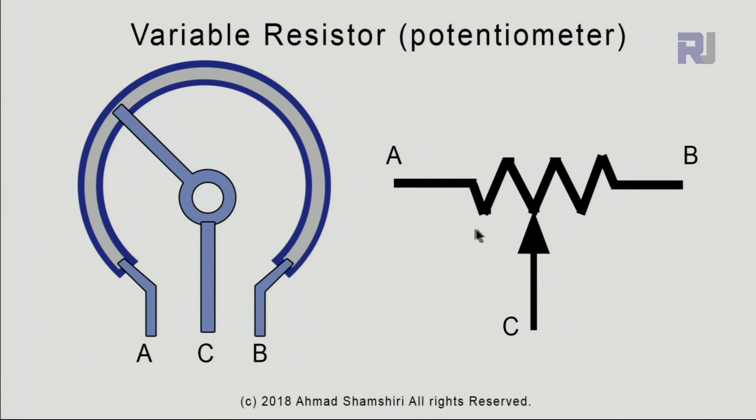Variable resistor or potentiometer is shown on diagrams like this. This is actually a resistor and this point at the middle is a sliding piece that goes either to the left or right. When you move it to the left it becomes the same value as at pin A, and if you are somewhere at the middle you will get half the value.